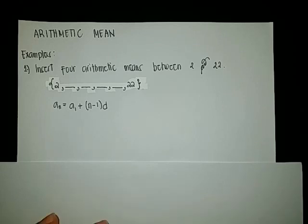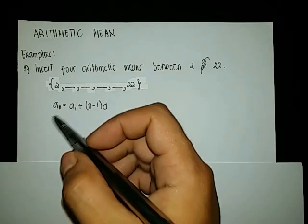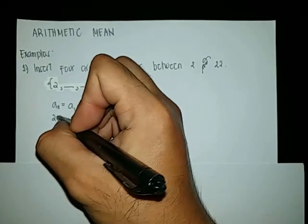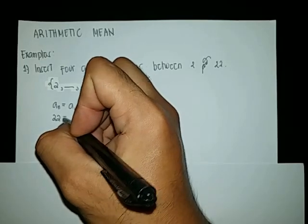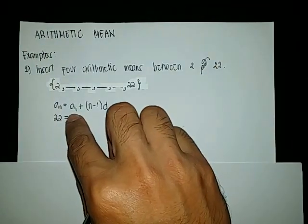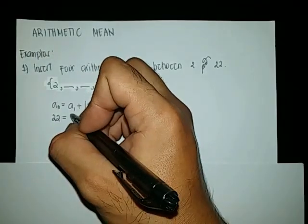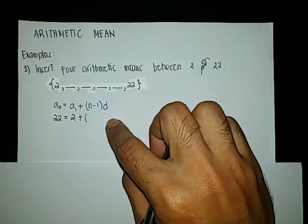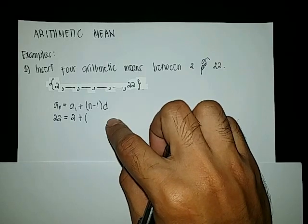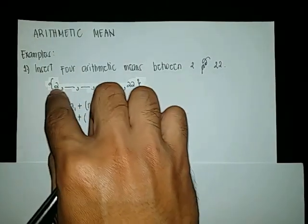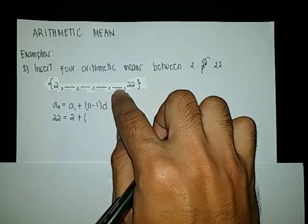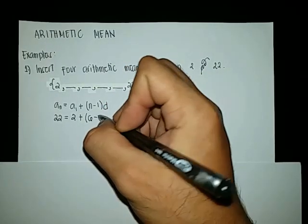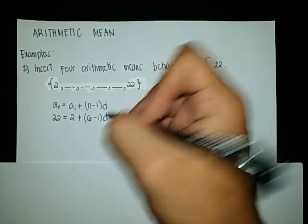Let us now solve for d. Our last term is 22, so that will be: 22 is equal to a sub 1, which is 2, plus the quantity of n minus 1 times d. How many terms do we have in our sequence? We have 1, 2, 3, 4, 5, and 6 — so n is 6. That gives us: 22 equals 2 plus 6 minus 1, multiplied by d.